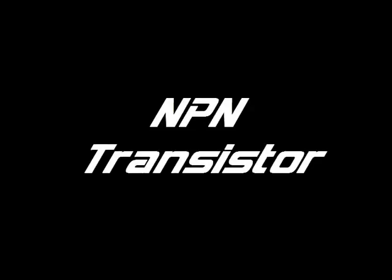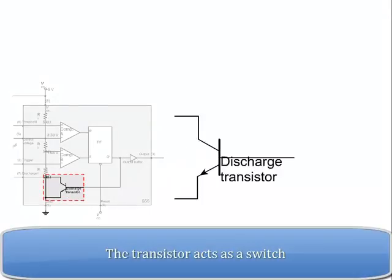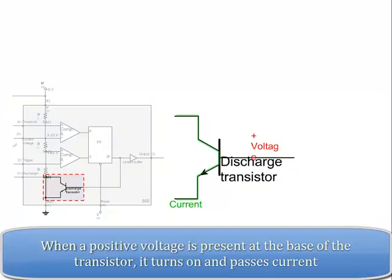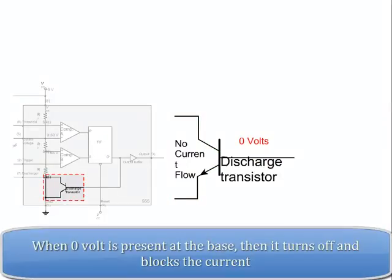NPN Transistor. The transistor acts as a switch. When a positive voltage is present at the base of the transistor, it turns on and passes current. When zero volts is present at the base, it turns off and blocks the current.